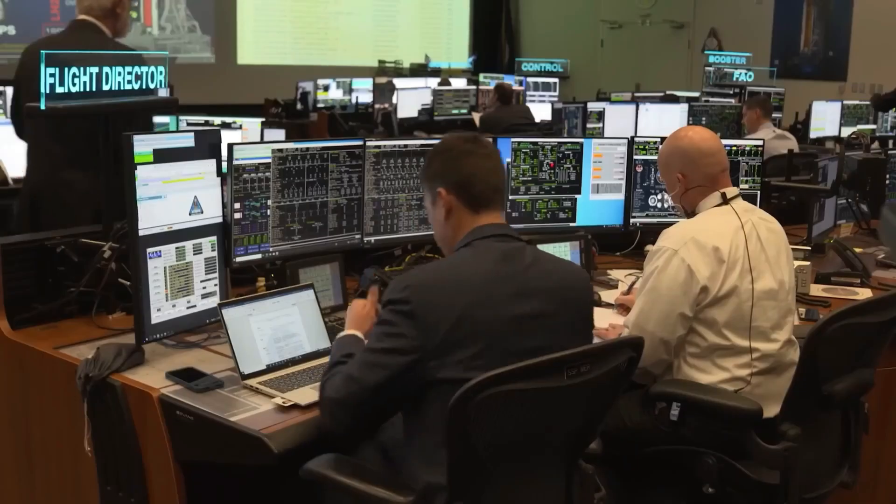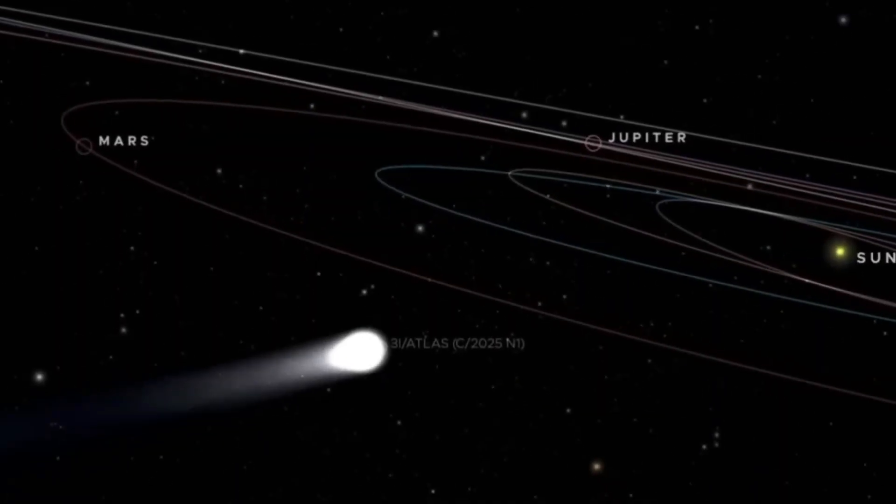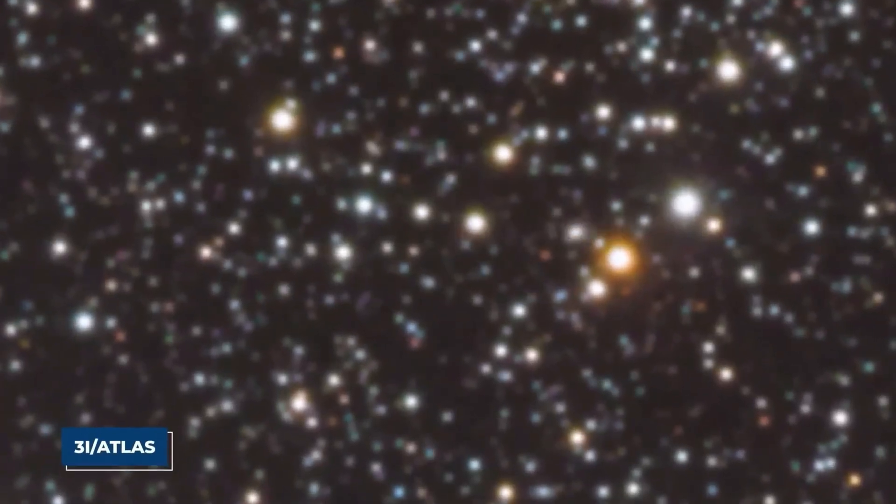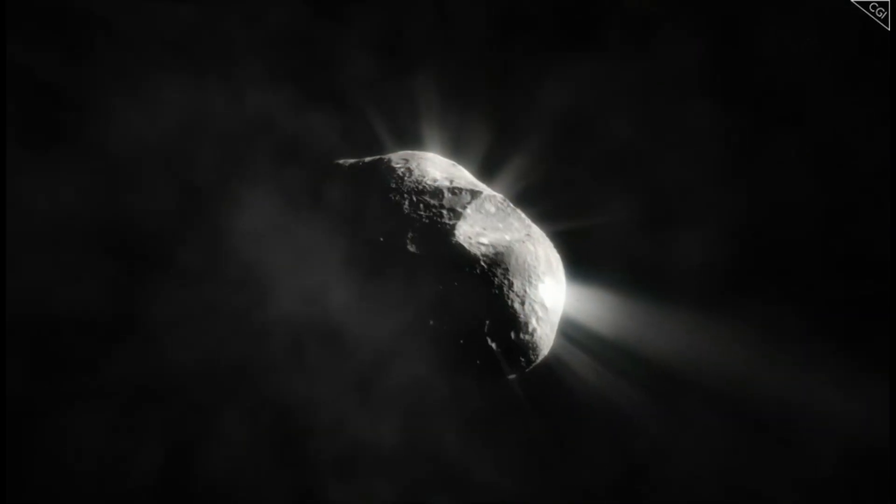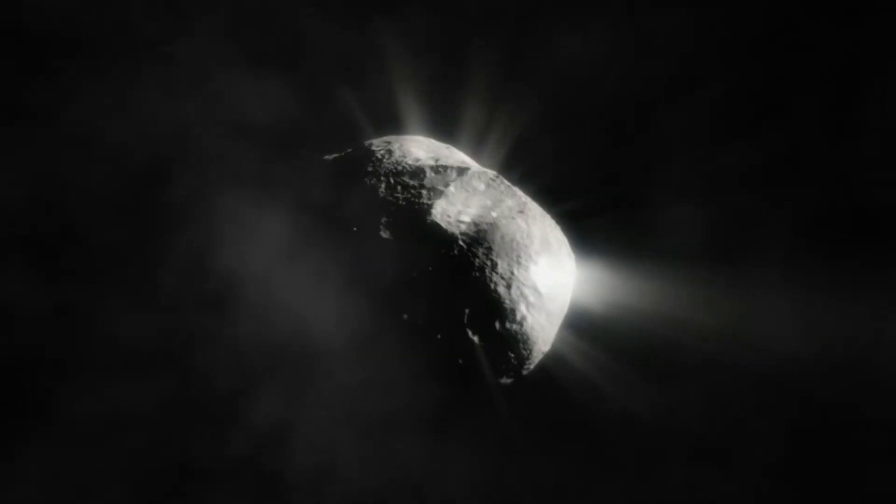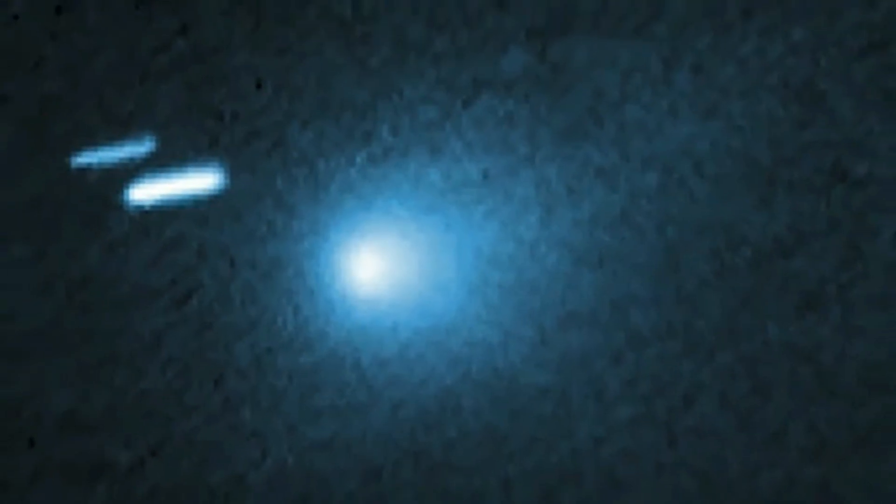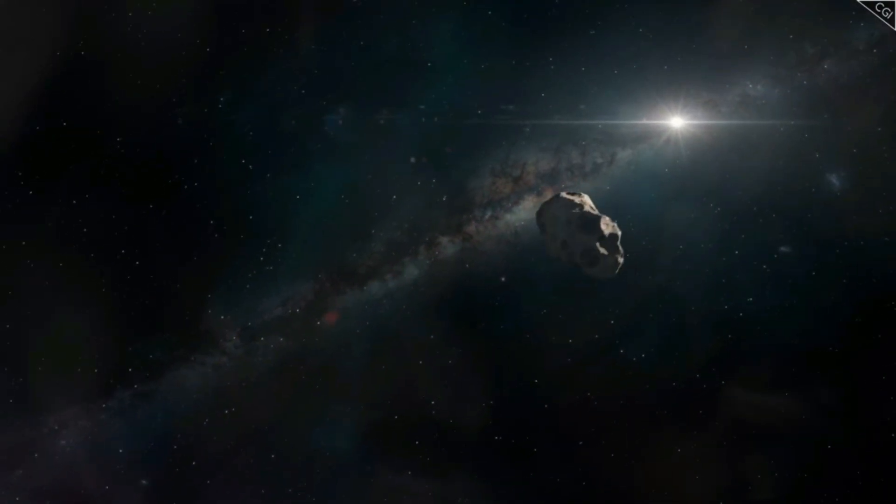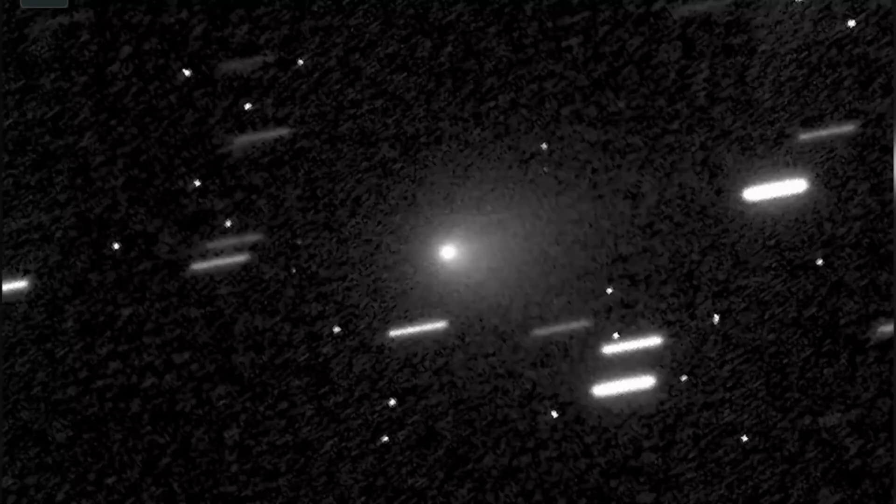The Boötes void is real. An almost spherical region of space, 30 million light-years across, nearly empty of galaxies. To visualize it, if the Milky Way were a marble in the center of a room, that room would normally be filled with thousands of other marbles. The Boötes void is like walking into a city-sized room and finding only one or two marbles inside. A statistical impossibility. For the message to originate from there made no sense. But what if 3I Atlas wasn't the source, but a relay?